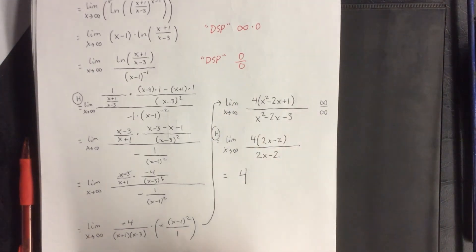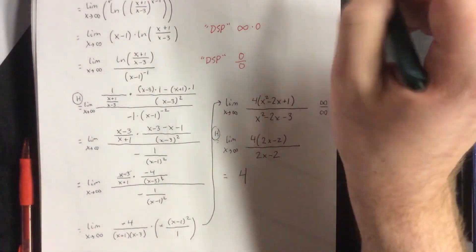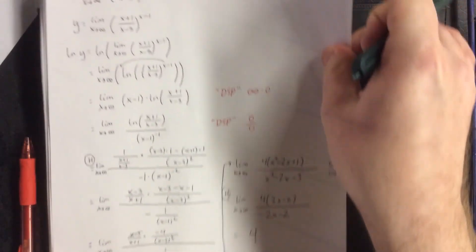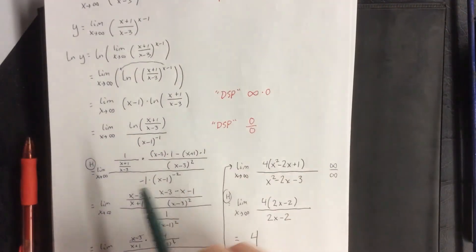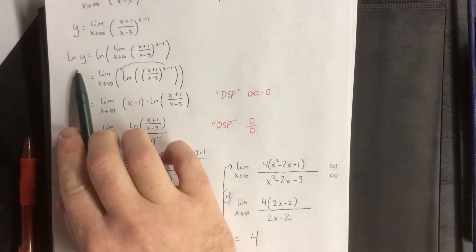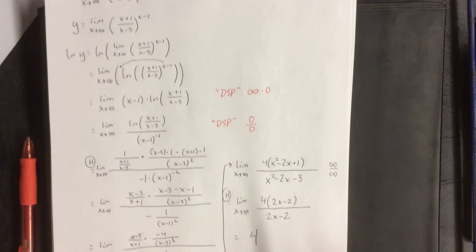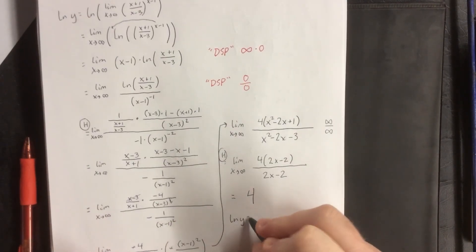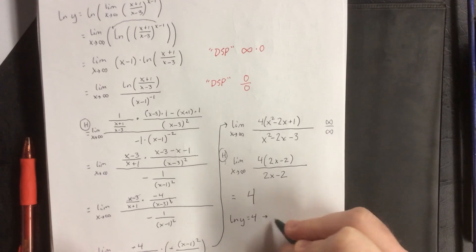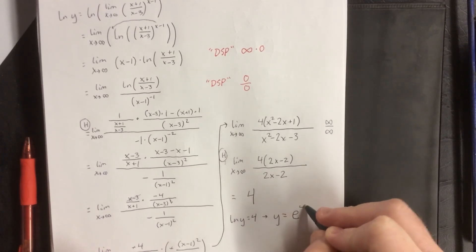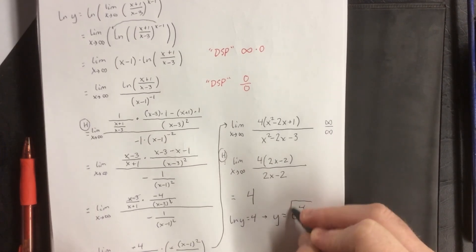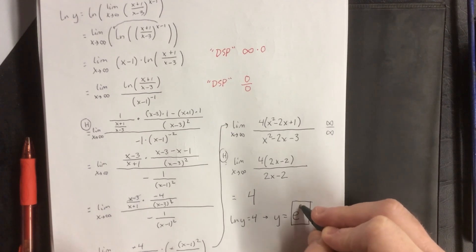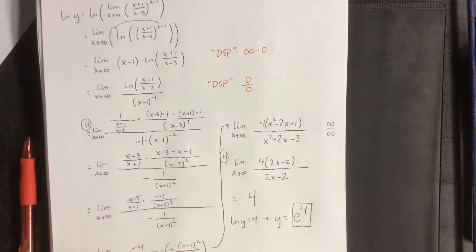Following all the way back, that result of 4 is equal to the natural log of y. So if the natural log of y is equal to 4, then y is equal to e raised to the fourth power. That is our final answer.